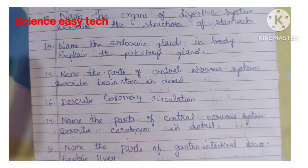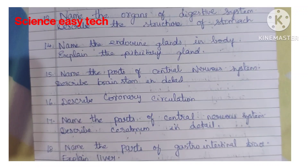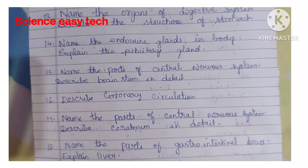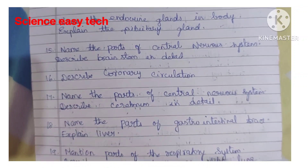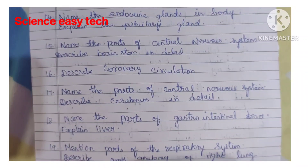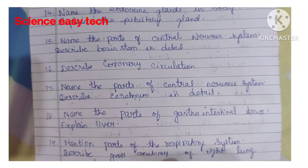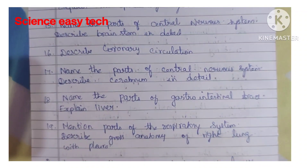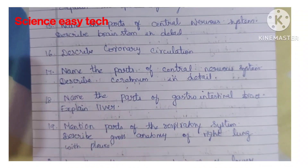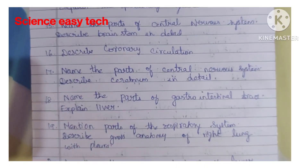Seventeenth question, name the parts of central nervous system and describe cerebrum in detail. Eighteenth question, name the parts of gastrointestinal tract and explain liver. Nineteenth question, mention parts of the respiratory system and describe gross anatomy of right lung with the pleura.